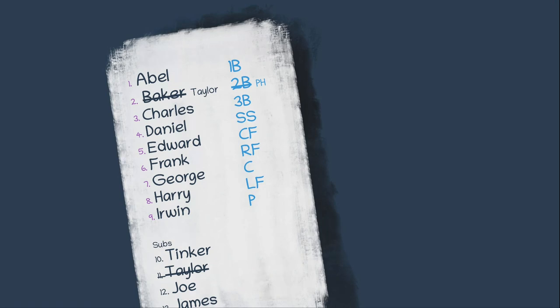Inevitably though, that half inning will end, and this team will have to take their defensive positions in the field, and Taylor will have to be assigned to one of them. Now, 98% of the time, Taylor will just take up Baker's spot at second base. Although sometimes you'll see Taylor go out to shortstop, and the shortstop will move over to second base. The players who are already in the game could trade positions all they want, but it generally doesn't happen all that often.